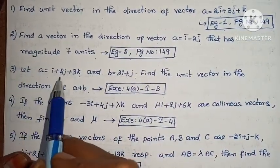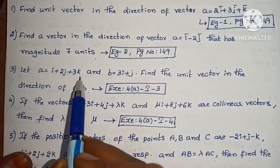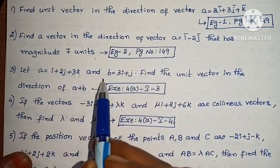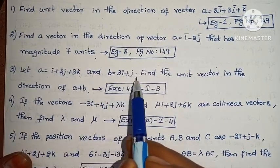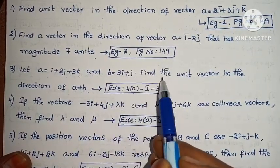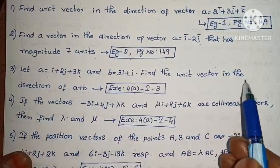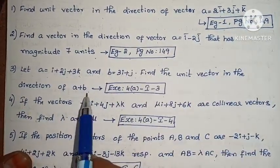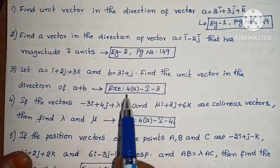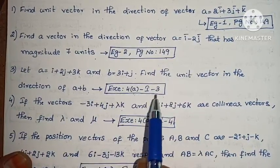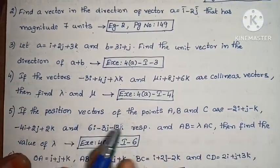Next: Let a equals to i + 2j + 3k and b equals to 3i + j. Find the unit vector in the direction of a plus b. Exercise 4A, problem 3.